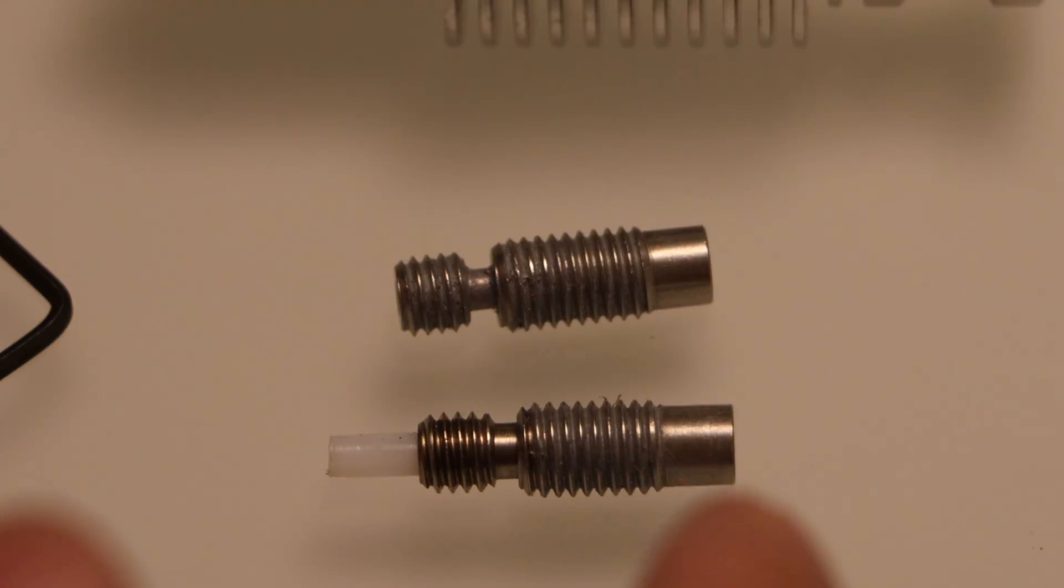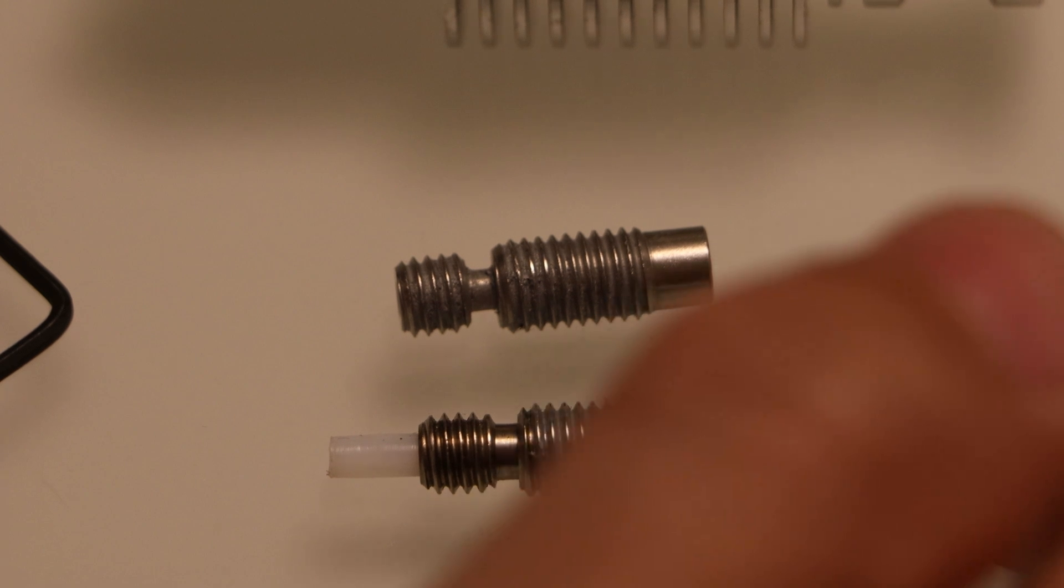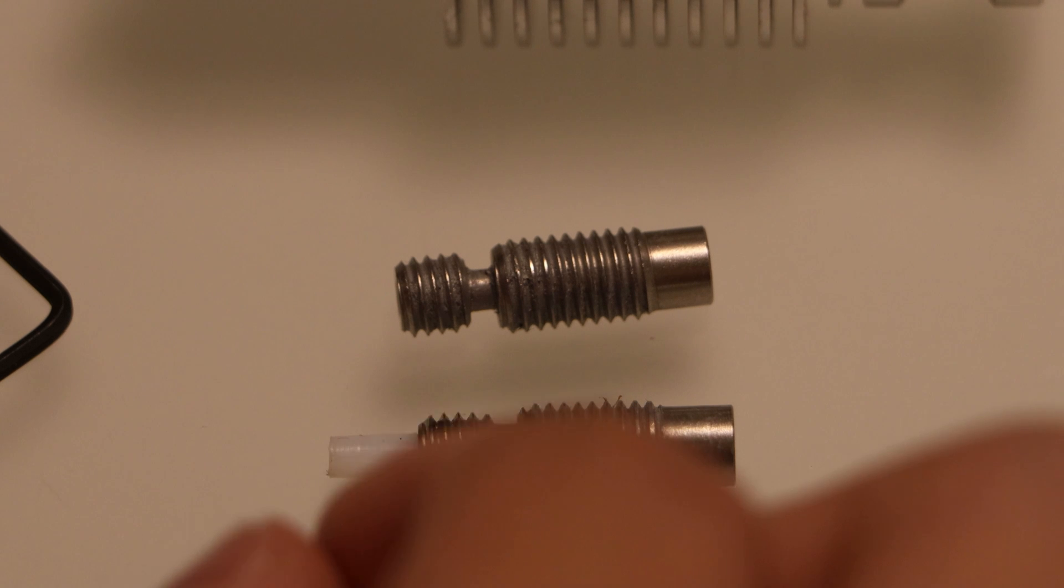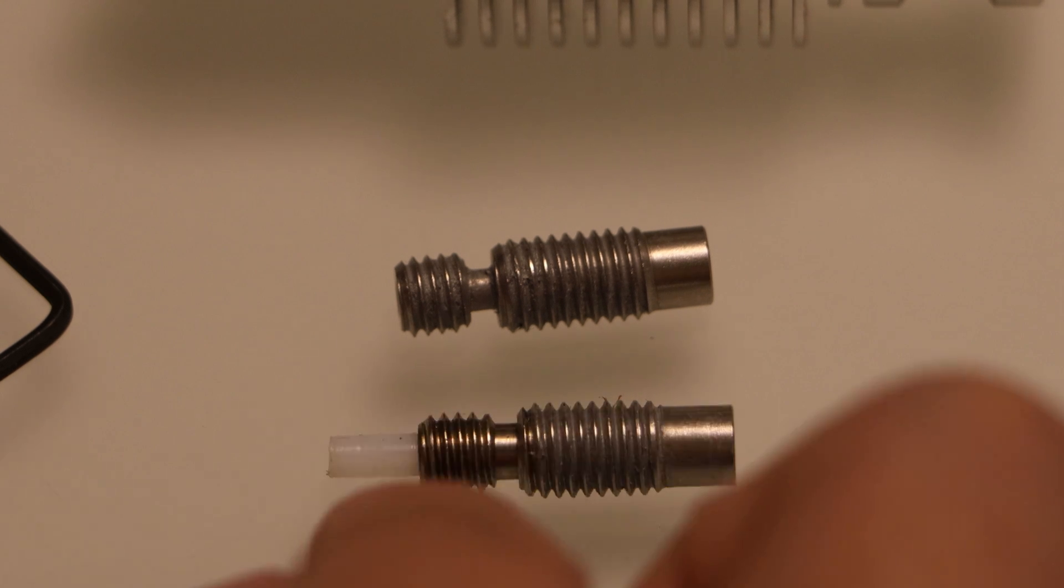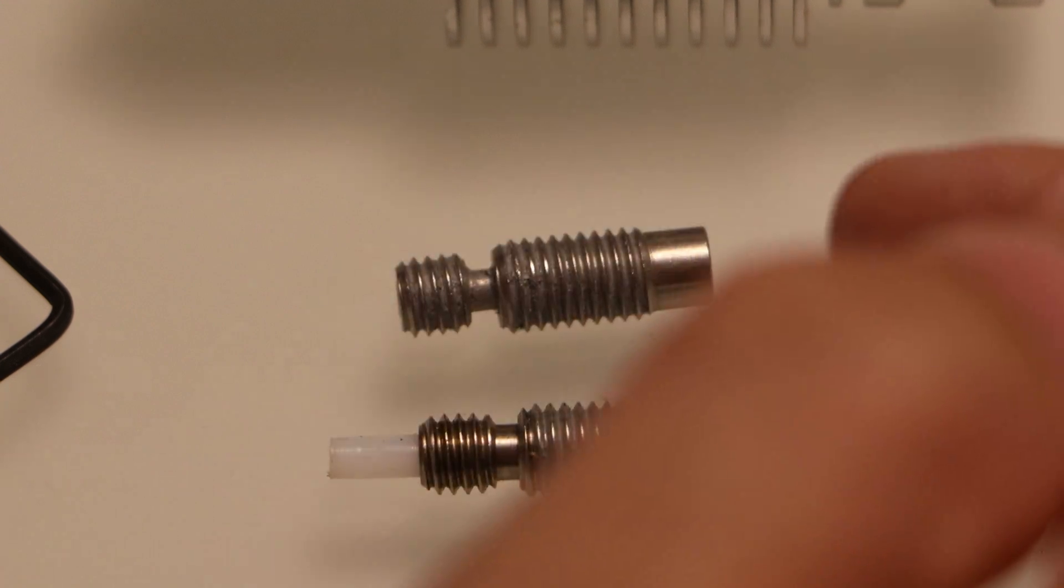A lot of beginner level printers ship with a PTFE lined heat break, because they're a lot easier to use and jam less often. But as soon as you learn how, I'd recommend switching over to an all-metal hotend. Just keep in mind that when you switch to an all-metal hotend, you're going to have to reduce your retraction settings. With a PTFE lined hotend, if you pull molten plastic back up into the heat break, it's not that big of a deal because there's a PTFE lining that'll be really slick and allow you to push it back out. But with an all-metal hotend, you might end up pulling molten material back up into this heat break, where it'll solidify and cause a jam.